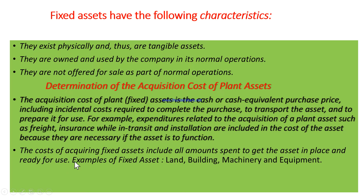For example, expenditures related to the acquisition of a plant asset such as freight, insurance costs while in transit, and installation are included in the cost of the asset because they are necessary for the asset to function. Fixed assets such as land, building, machinery, and equipment are the best examples of plant assets.